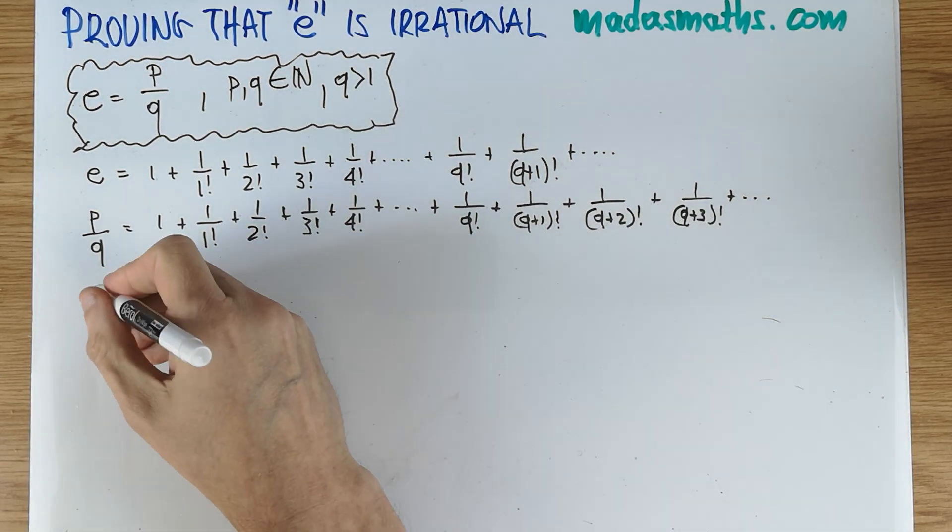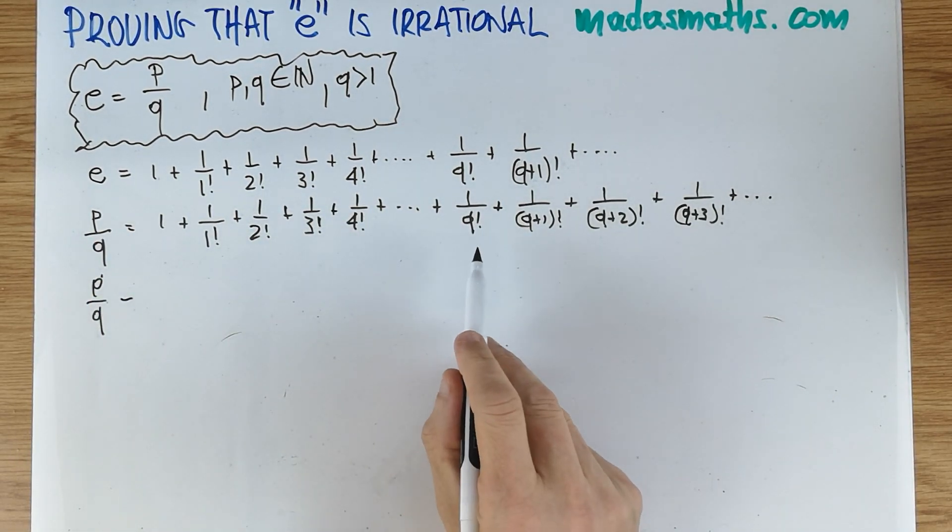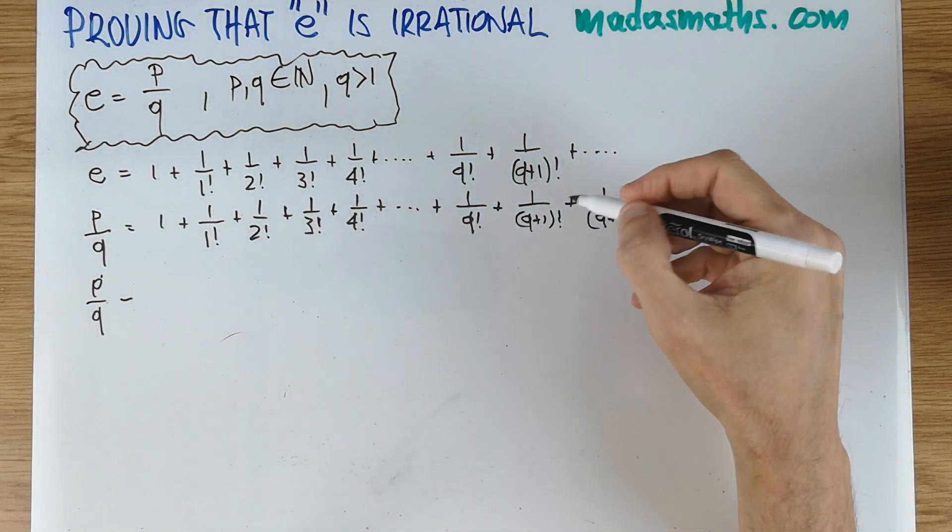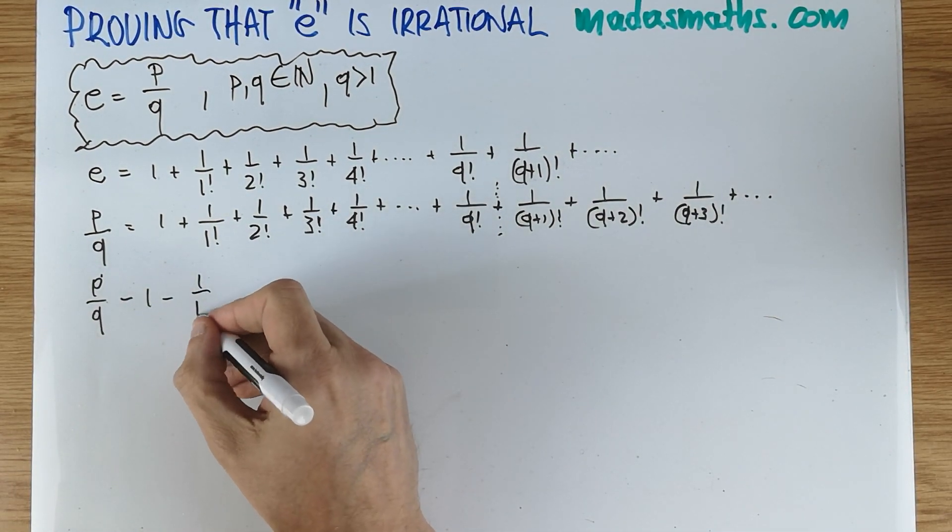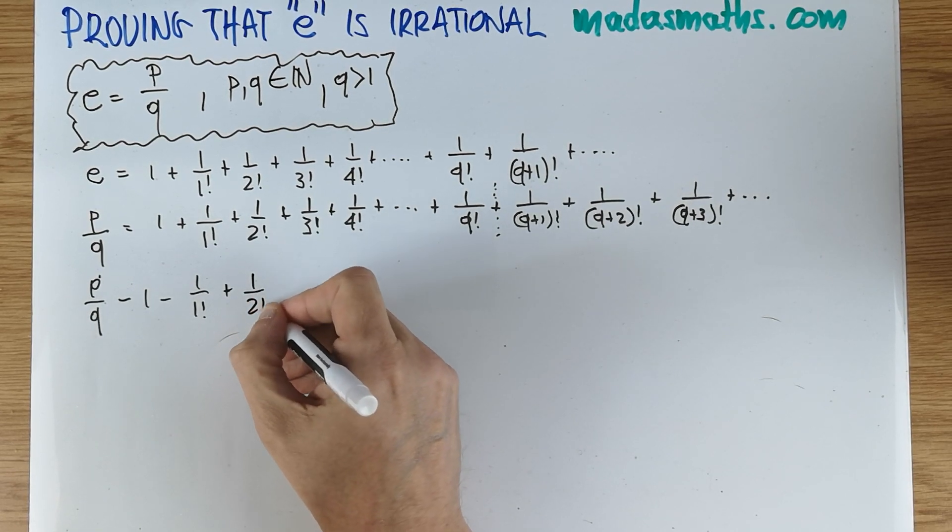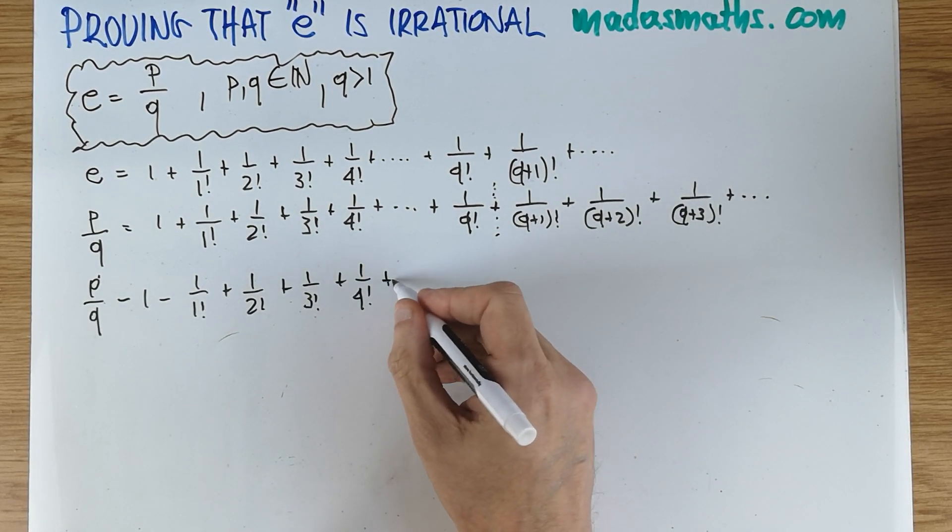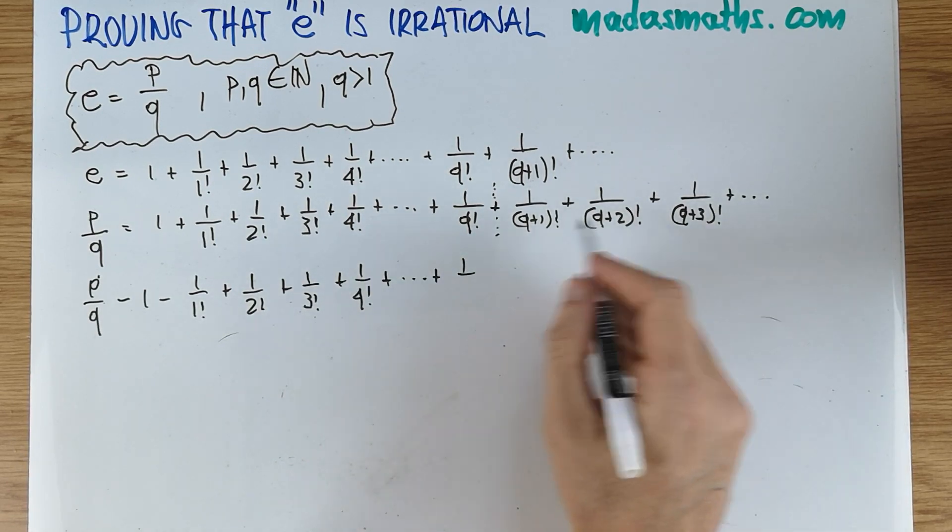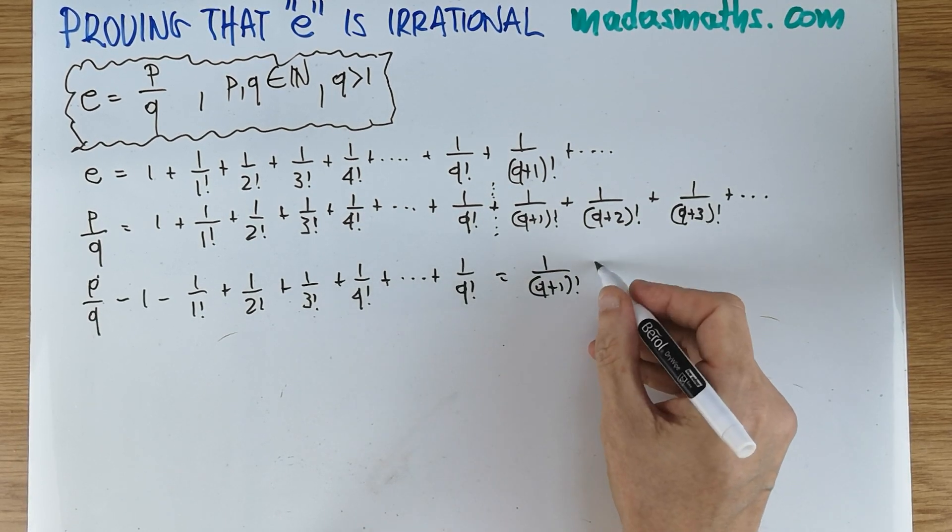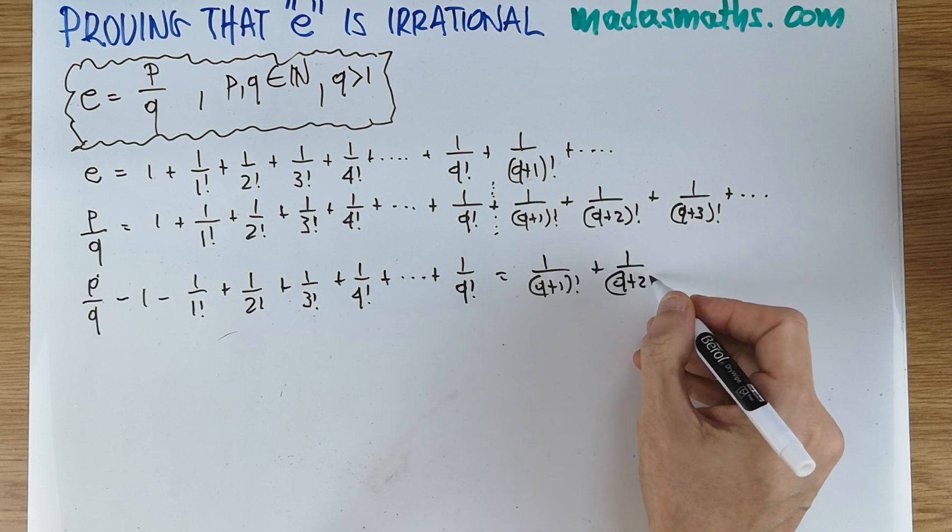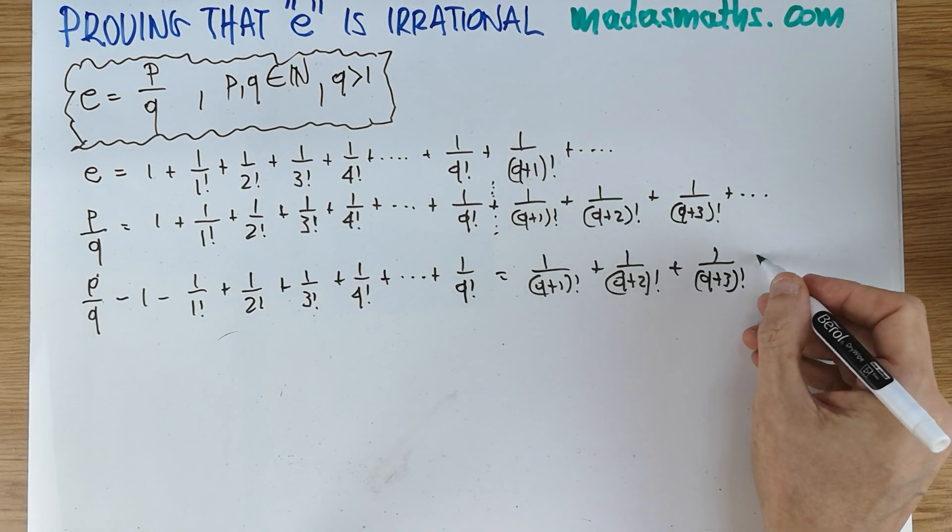So that line is basically that line. I've just put a few extra terms. And I wrote my e as being claimed at the beginning as p over q. I'm now going to subtract p over q. And I'm going to subtract some terms. And I'm subtracting all the terms up to q, up to here. Sorry, to q factorial rather, to the left. So it's going to be exactly this.